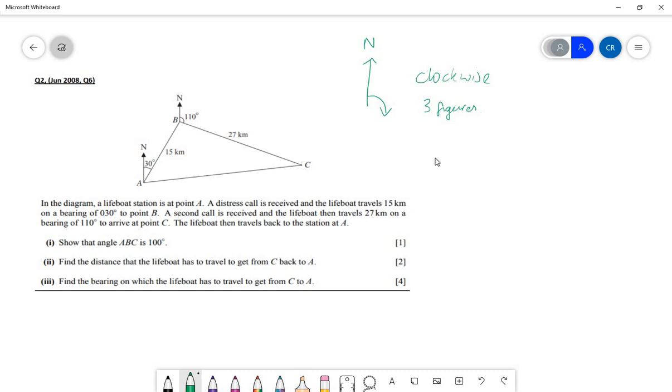Let's look at this question from triangle geometry. In the diagram, a lifeboat station is at point A. A distress call is received and the lifeboat travels 15 kilometers on a bearing of 030. We can see it's got three digits there. They have drawn a north line at A.